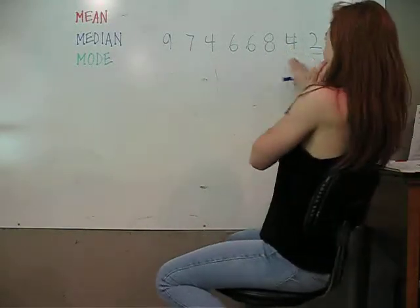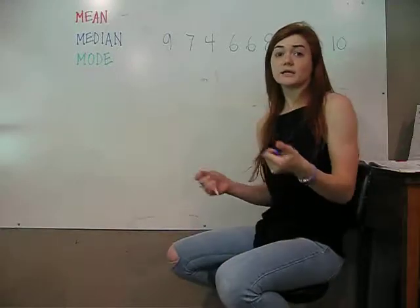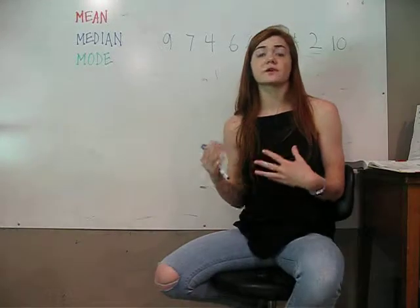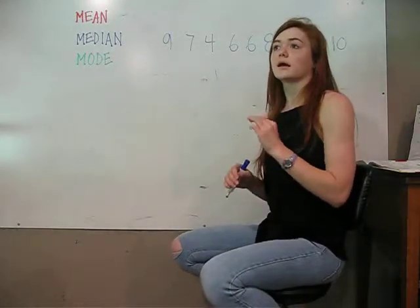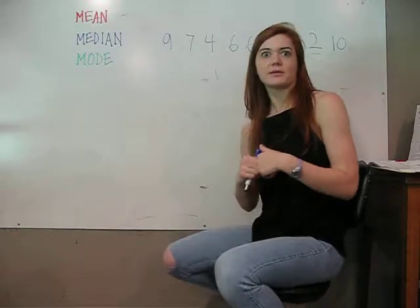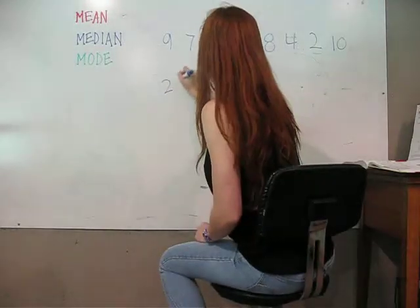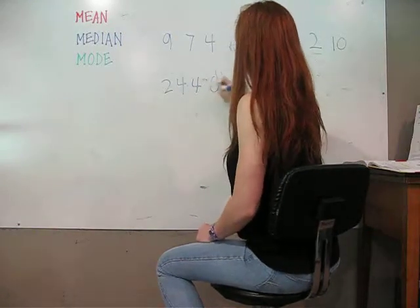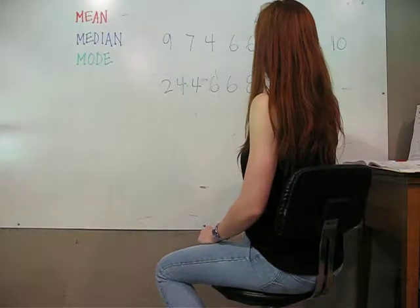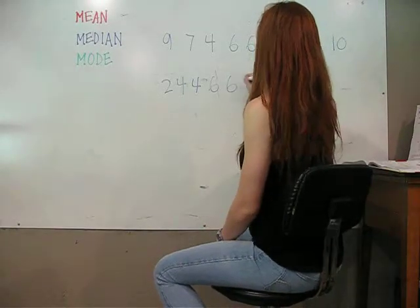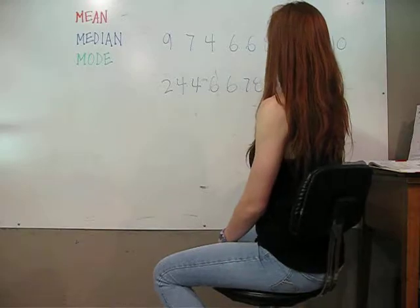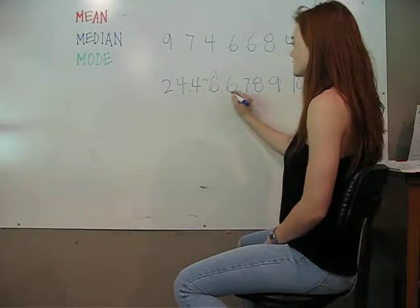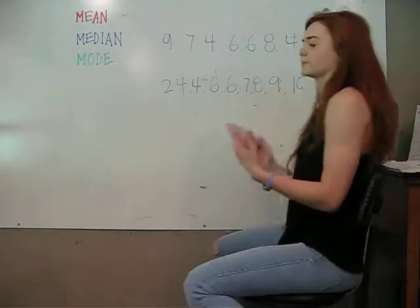Our data set is: 9, 7, 4, 6, 6, 8, 4, 2, 10. For the median, you definitely want to put these in order from least to greatest. The mode is just easier to see in least-to-greatest order, but for the median it's easier to find the middle if they're in order. So ordered: 2, 4, 4, 6, 6, 7, 8, 9, 10. You can also put little commas if you want to separate the numbers.